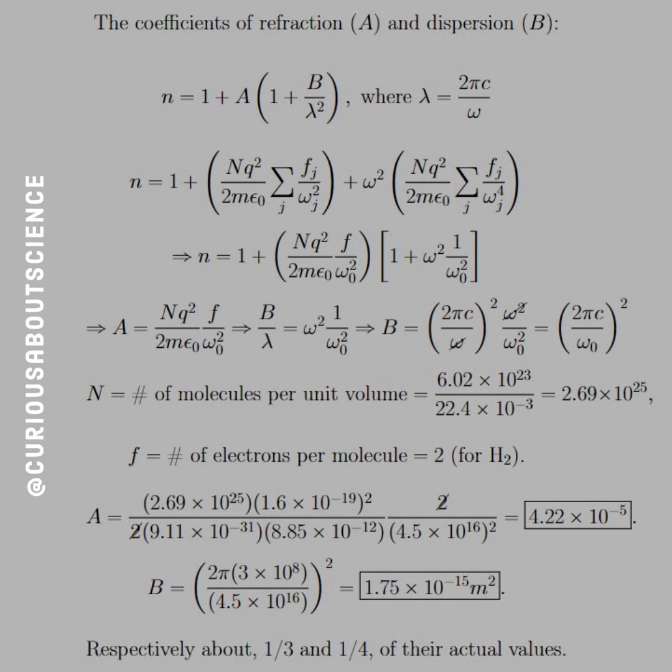The coefficient of refraction A and dispersion B are given by N equal 1 plus A times 1 plus B over lambda squared, which I believe was the Cauchy formula, or the Euler formula, one of the two. Here, though, we see that lambda is equal to 2 pi C over omega. And if we push in what these things were, given as A and B and all that other stuff, we can factor things out.